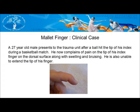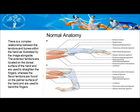A 27-year-old male presented to the trauma unit after a ball hit the tip of his index finger during a basketball match. He complained of pain on the dorsal surface of the tip of his index finger, along with swelling, bruising, and inability to extend the tip of his finger. The normal anatomy of the muscles, tendons, and bones of the hand are displayed in the image.